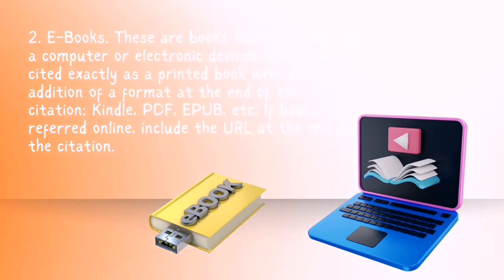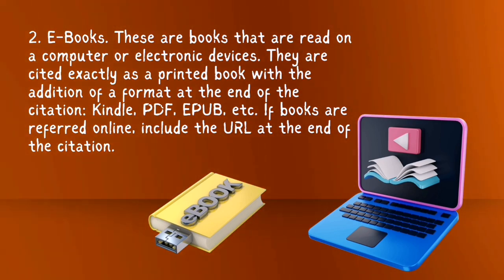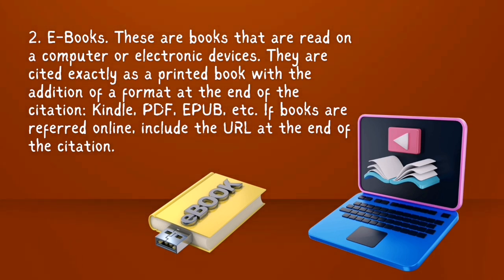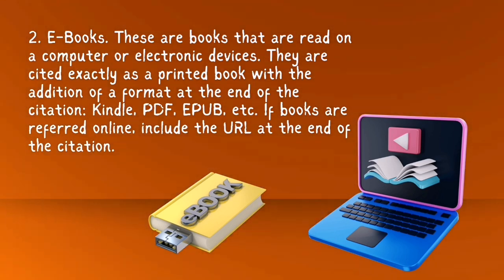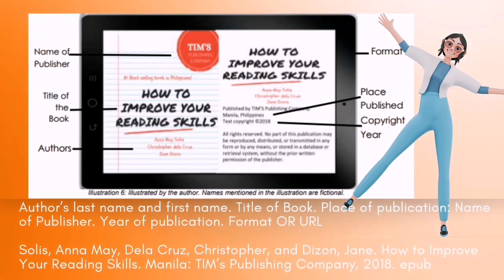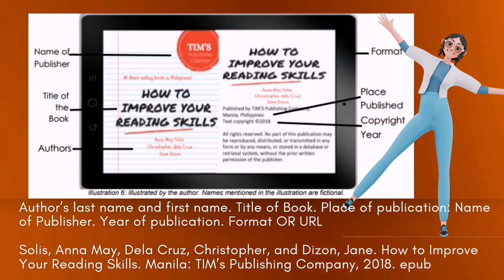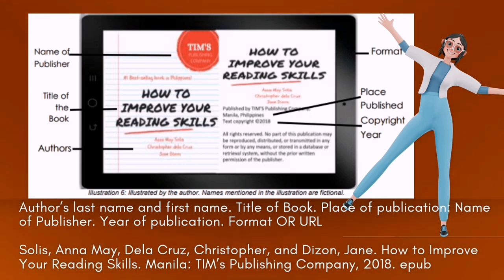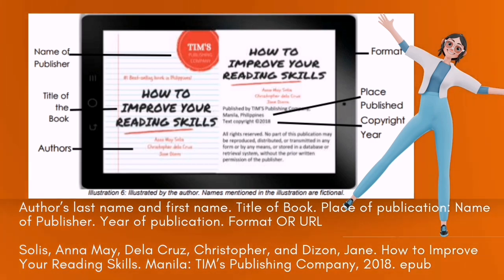Next is e-books — these are books that are read on a computer or electronic devices. They are cited exactly as a printed book with the addition of a format at the end of the citation, such as Kindle, PDF, Epub, etc. If books are referred to online, include the URL at the end of the citation. Sample format: author's last name and first name, title of book, place of publication, name of publisher, year of publication, format or URL. Example: Cullo, Anime; Dela Cruz, Christopher; and Dizan, Jane. How to Improve Your Reading Skills. Manila: Timms Publishing Company, 2018. Epub.